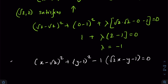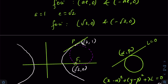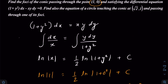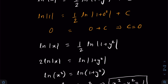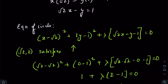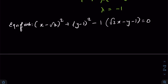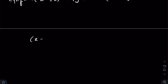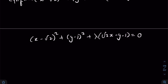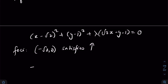Since the question says the circle passes through one of the foci, we should also check the other focus (−√2, 0). Going back to the family of circles equation: (x − √2)² + (y − 1)² + λ(√2·x − y − 1) = 0, let's substitute (−√2, 0) to find λ.